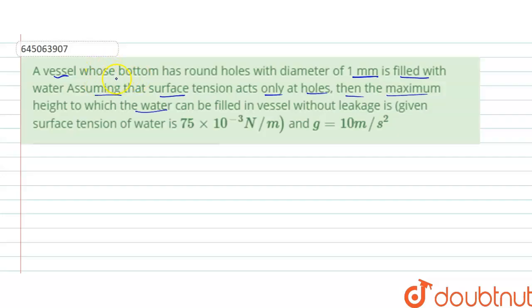A vessel having holes with diameter of 1 mm is filled with water, assuming that surface tension acts only at holes. Then the maximum height to which water can be filled in vessel without leakage.